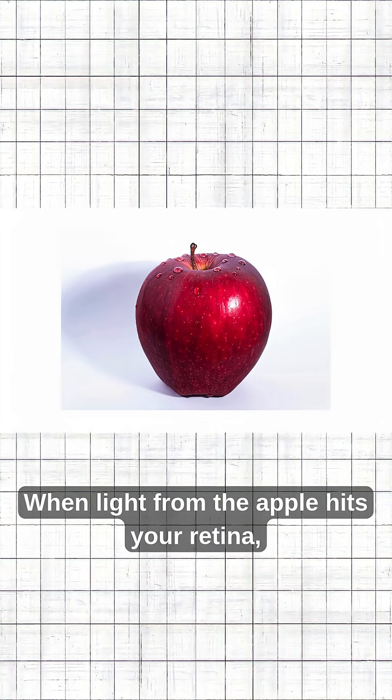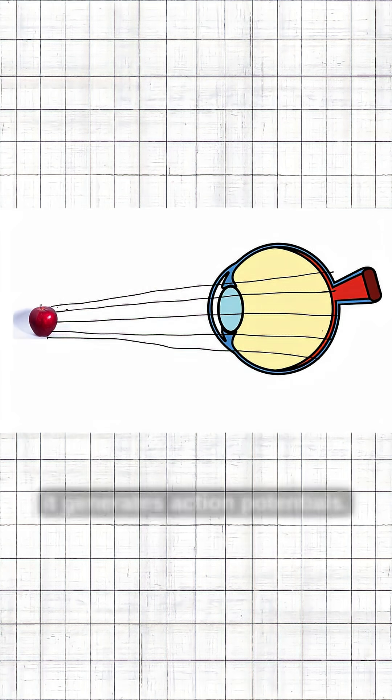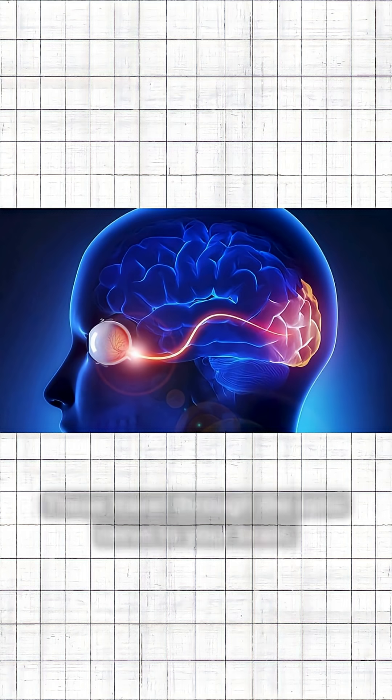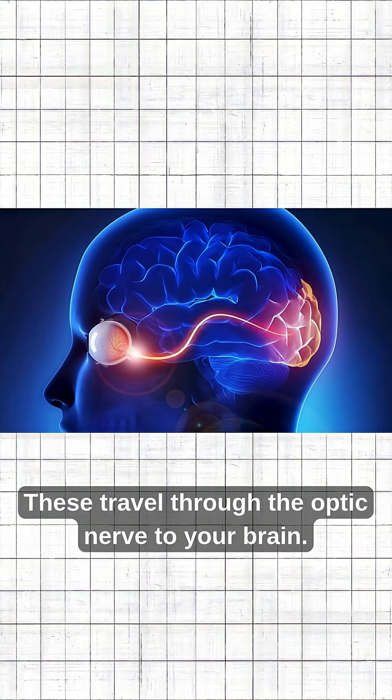Let's say you see an apple. When light from the apple hits your retina, it generates action potentials that travel through the optic nerve to your brain.